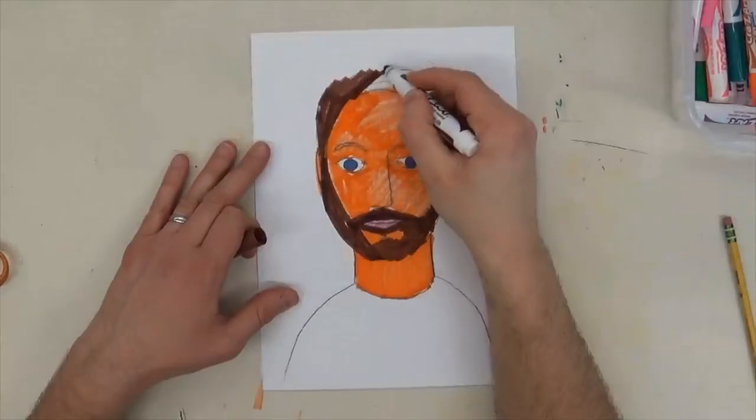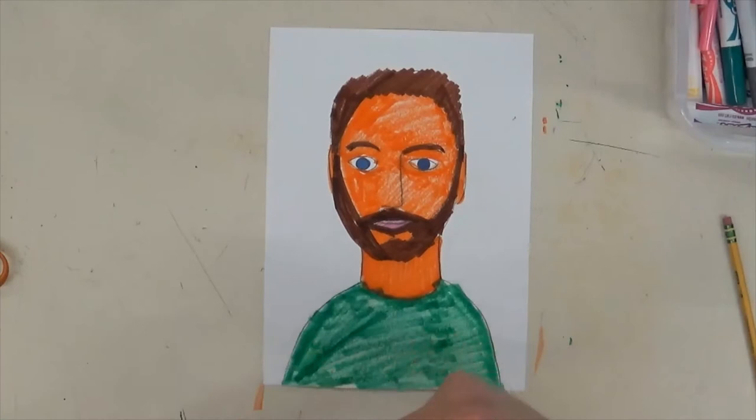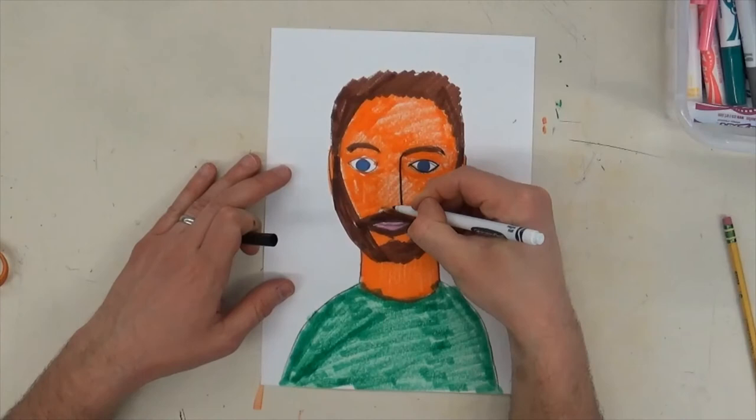So once you have your portrait drawn, you can color it in. Once you have your portrait painted or colored in, you can go through and give it a black outline just so your lines will show up a little bit better.